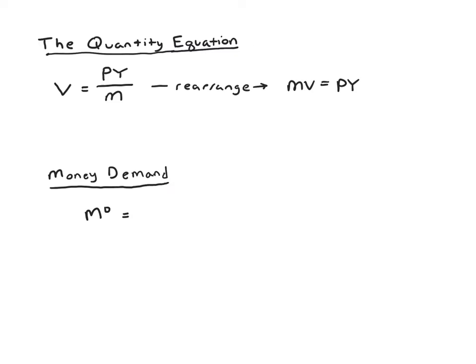So now that we've reviewed velocity, let's talk about money demand. When you think about money demand, sometimes it's tempting to think of this as demand for money because I want to be rich. And that's really not what this is about. This is about demand for money as opposed to other stores of value, as opposed to other assets.